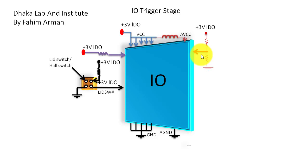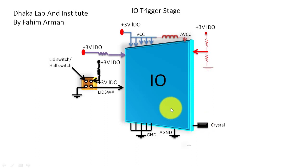For successful IO triggering, the thermal protection section or circuit is very important. We can also see there is a crystal here, and the crystal is very important because it creates frequency that goes into the IO chip. After receiving frequency, the IO chip creates voltages and other signals.